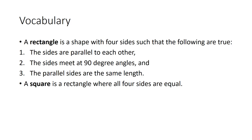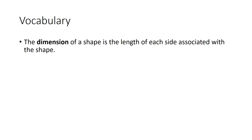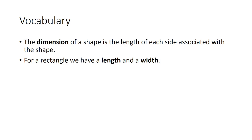A square is a rectangle where all four sides happen to be equal, so a square is a special case of a rectangle. For rectangles we have one side called the length and another called the width. For squares we simply refer to the side, since all lengths are the same by definition.